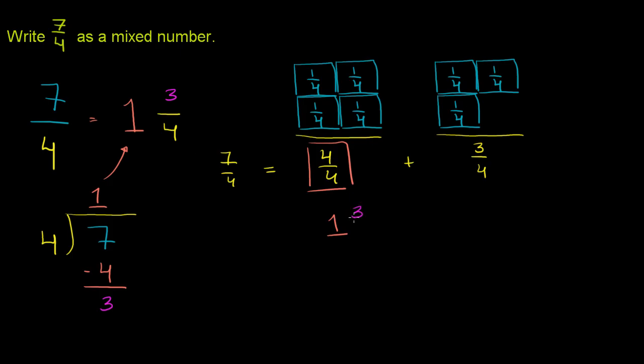So you have 1 whole with 3 fourths left over. So you end up with 1 and 3 fourths. So that is the 3 fourths part, and that is your 1 whole. Hopefully that makes sense and you understand why it connects.